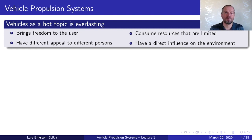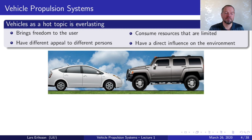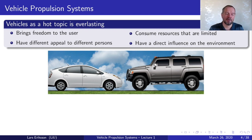On the other side, when we're using vehicles, we're consuming resources that are limited and we have a direct influence on the environment. So we have things that we would like to have and things that we need to take care of. For example, we have the Toyota Prius, which is the role model of the efficient vehicle. And then we have the Hummer — the role model of a gas-guzzling resource consumer. Some people like the one, others like the other.